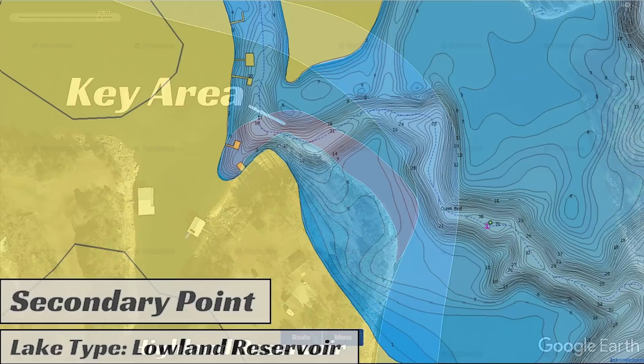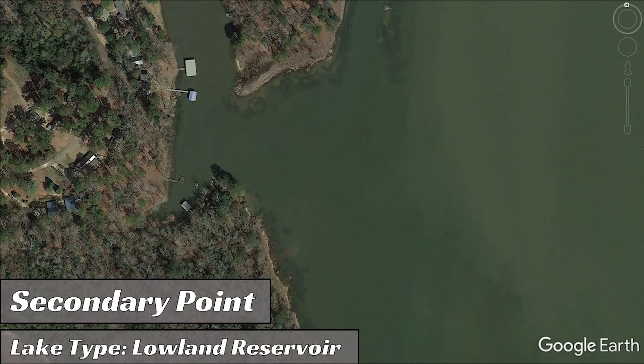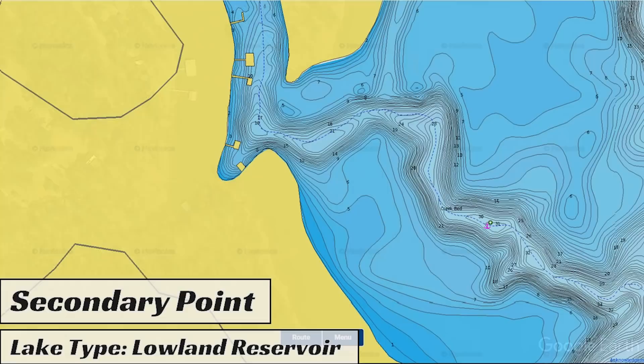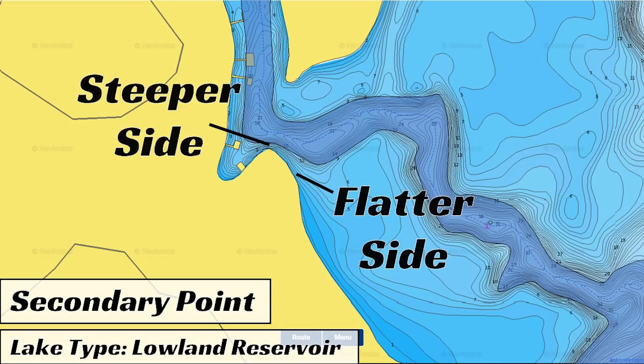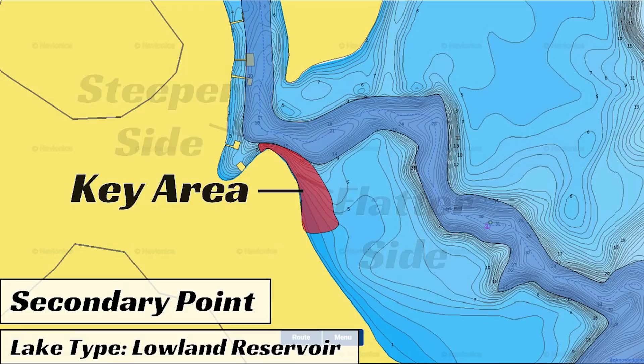Here's another example of a secondary point, but this time on a lowland reservoir. In general, lowland reservoirs are shallower and have more stain in the water than highland reservoirs, and therefore these secondary points are going to be a little bit shallower and look slightly different. In this example, a creek channel runs right up against the tip of the secondary point. This creates a steep drop-off right off the tip of the point and a more gradual slope on the right side of the point. The key area is again going to be that transition from the steeper side of the point to the more gradual side.